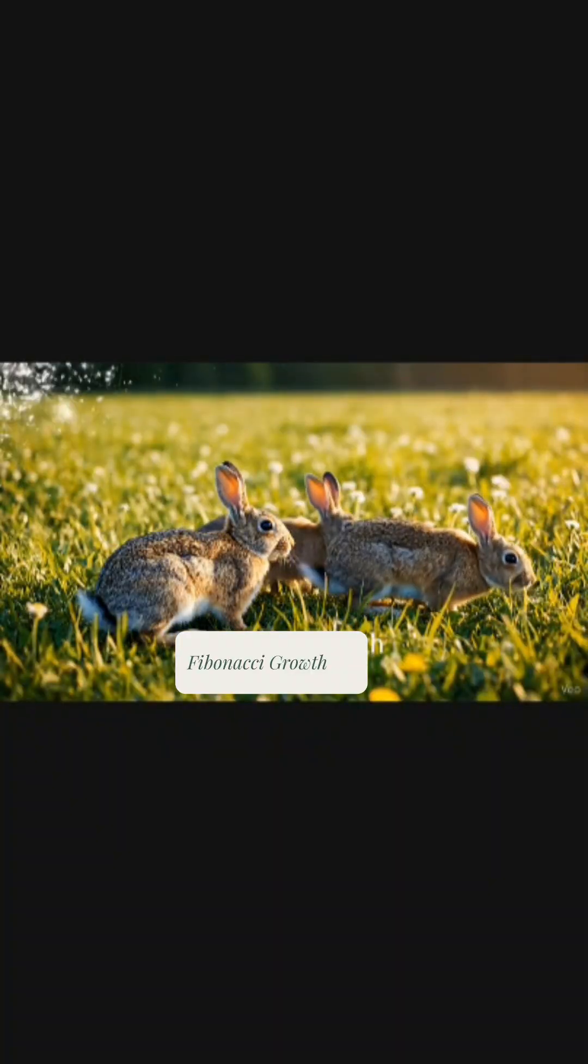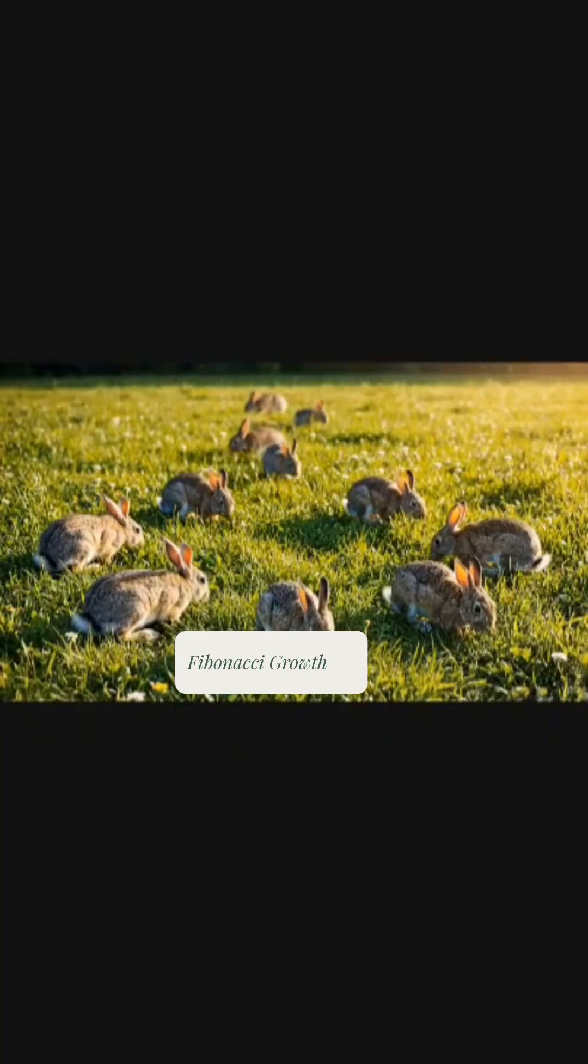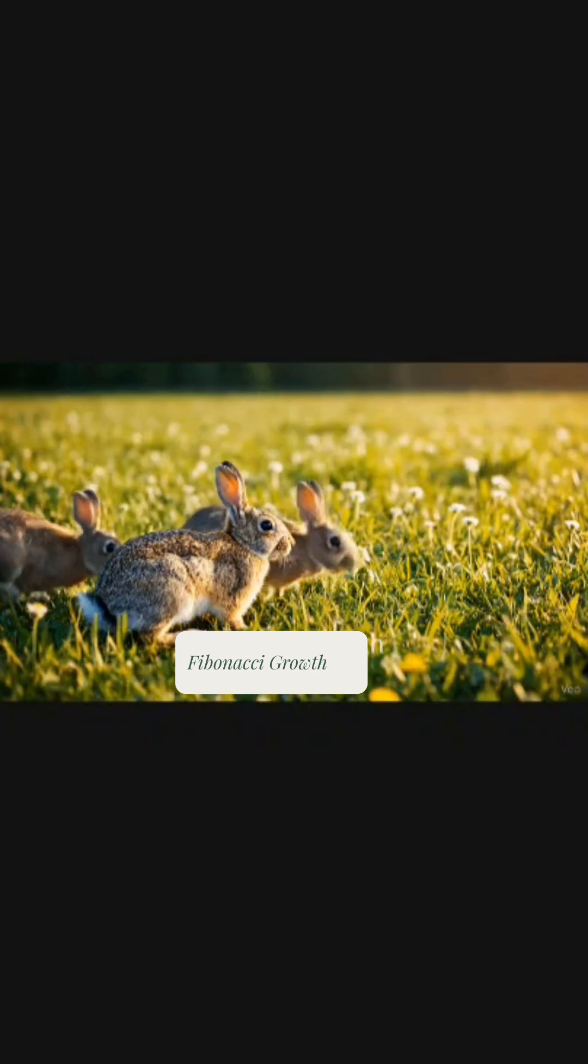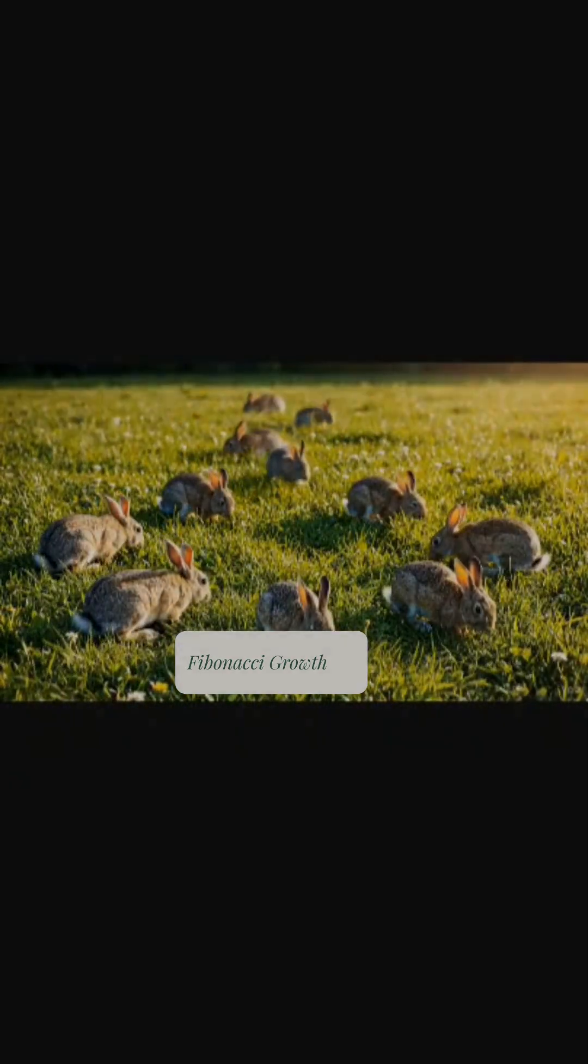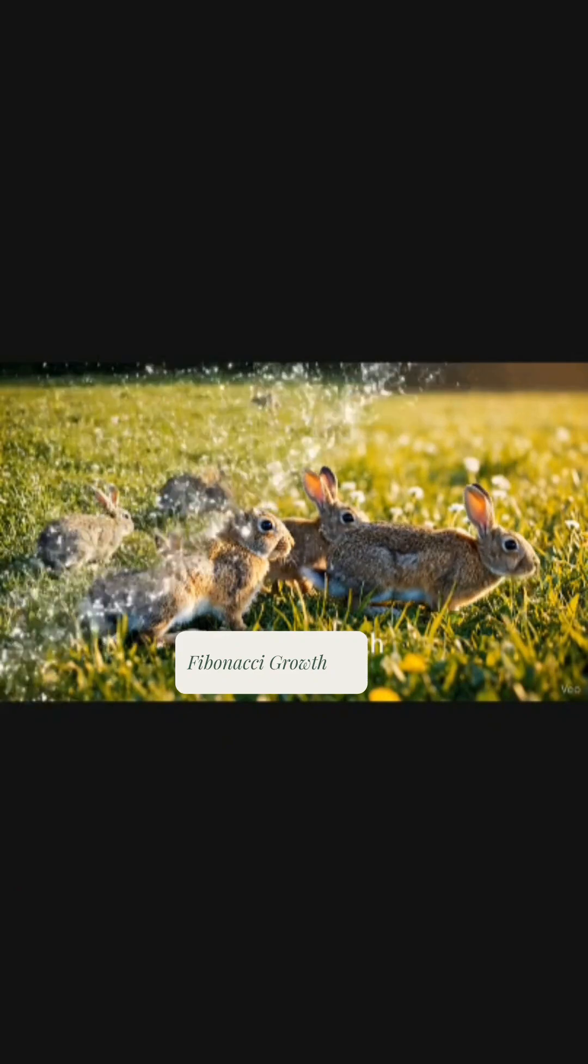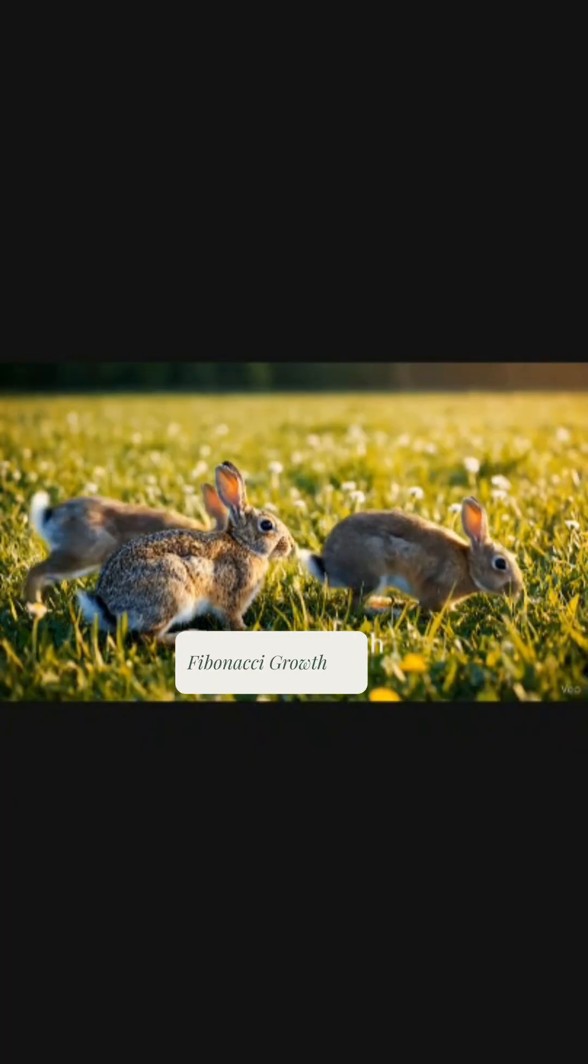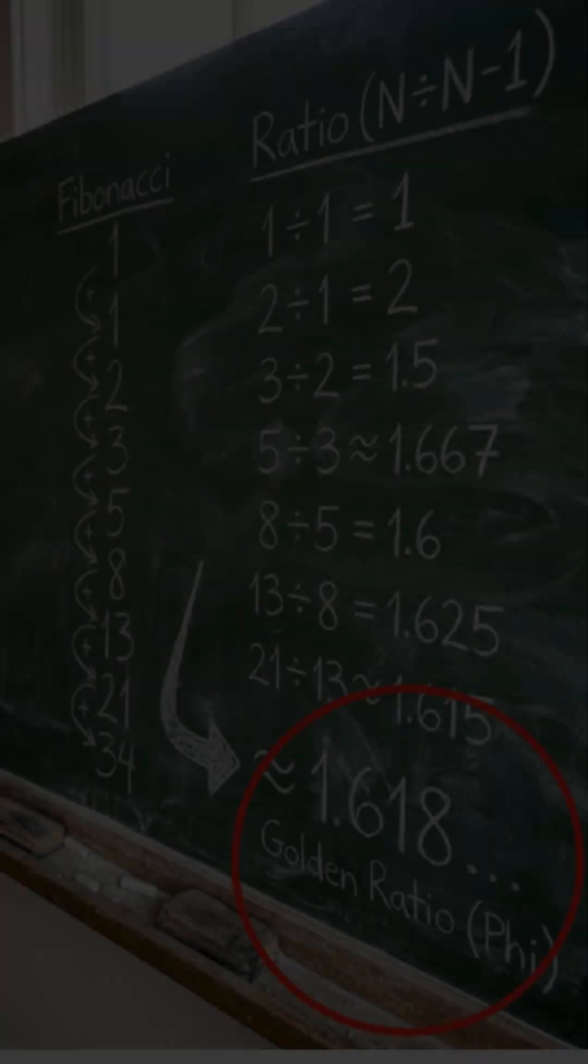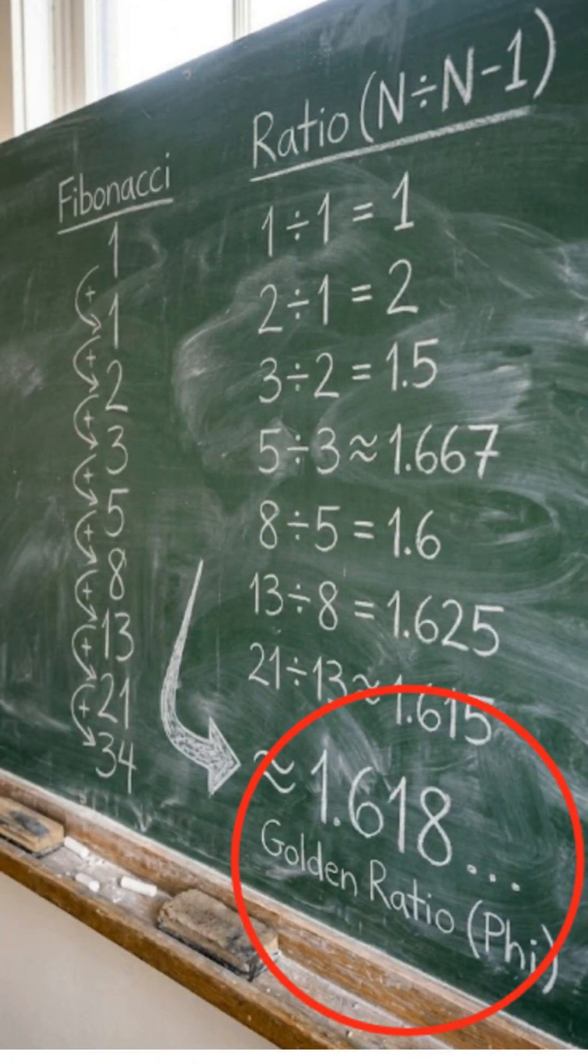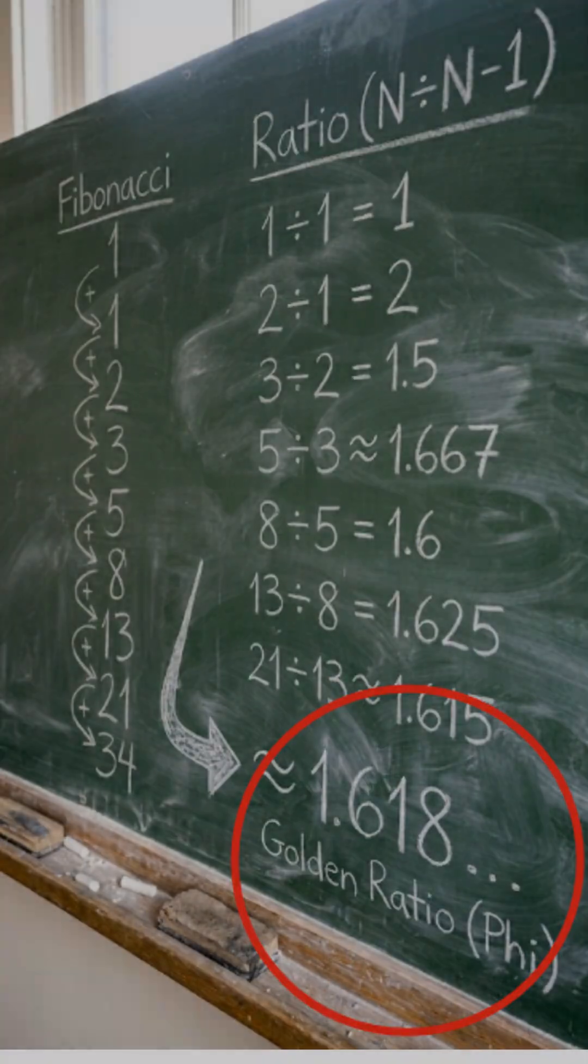Simple analogy. Think of it like this: imagine rabbits multiplying, the original Fibonacci problem. The population doesn't just grow randomly, it grows at a steady pace that can be captured by one magical number. That magic growth number is the Fibonacci constant, the constant whose value as discussed earlier was around one point six one eight.